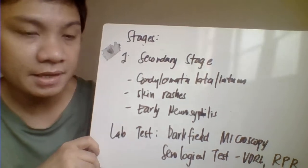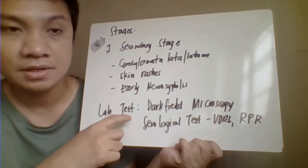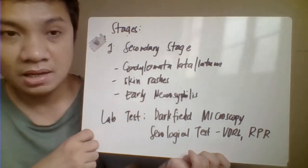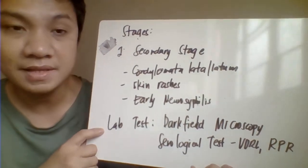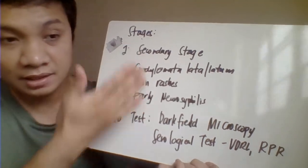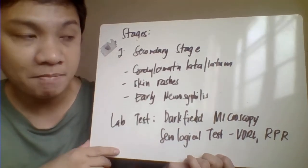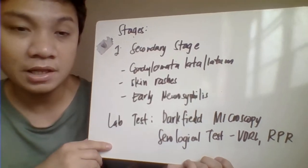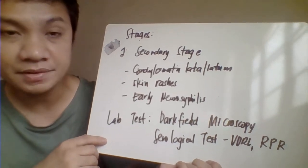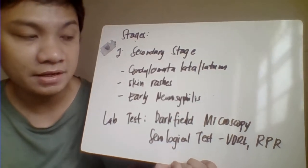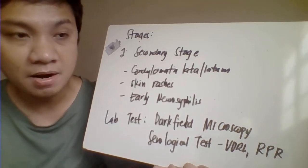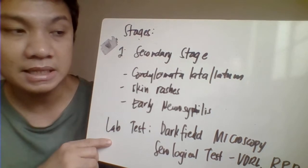For laboratory tests in the secondary stage, dark field microscopy is still diagnostic because the patient still has lesions in the form of condylomata lata. Serological tests such as VDRL, RPR, and treponemal antibody testing can also give positive results in the secondary stage.